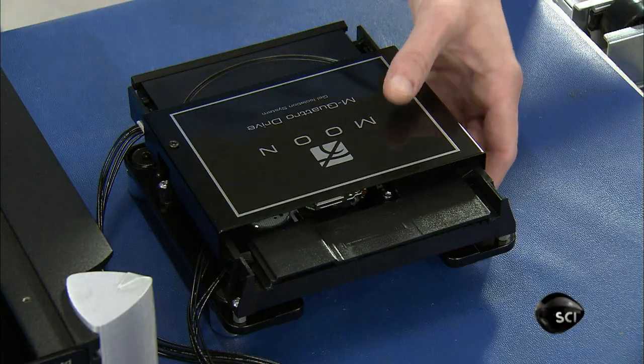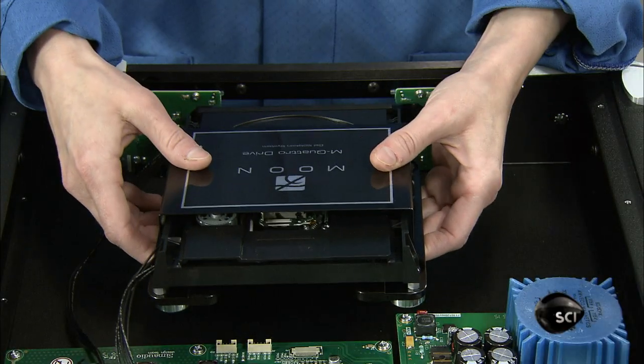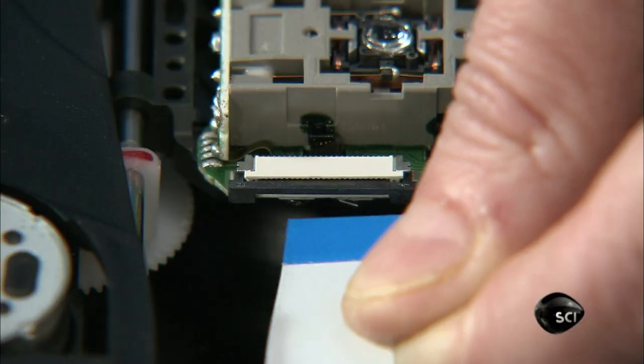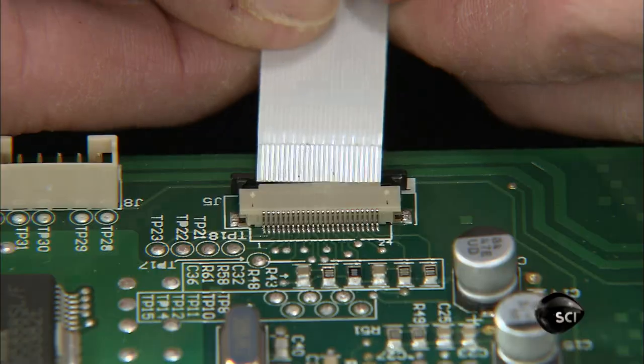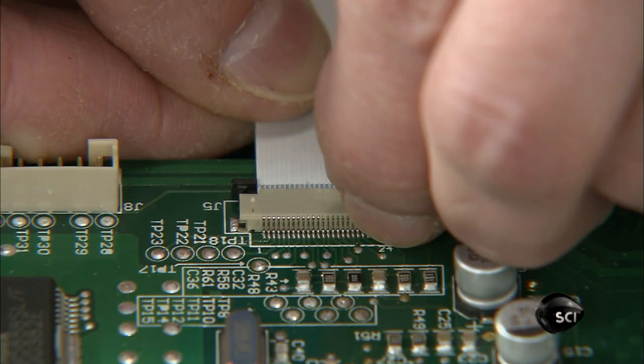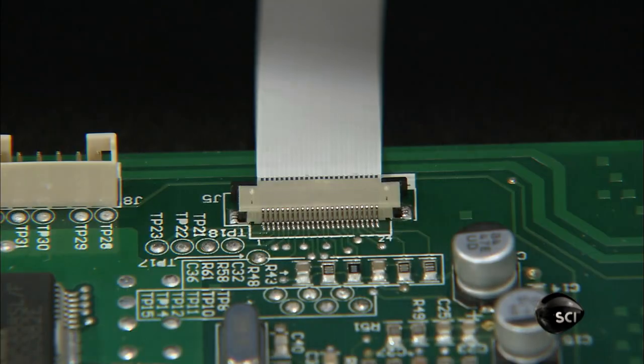Next, they install the CD drive. This requires connecting three cables into the main board: one for the optical reader, and two for the motors that open and close the loading tray and spin the compact disc.